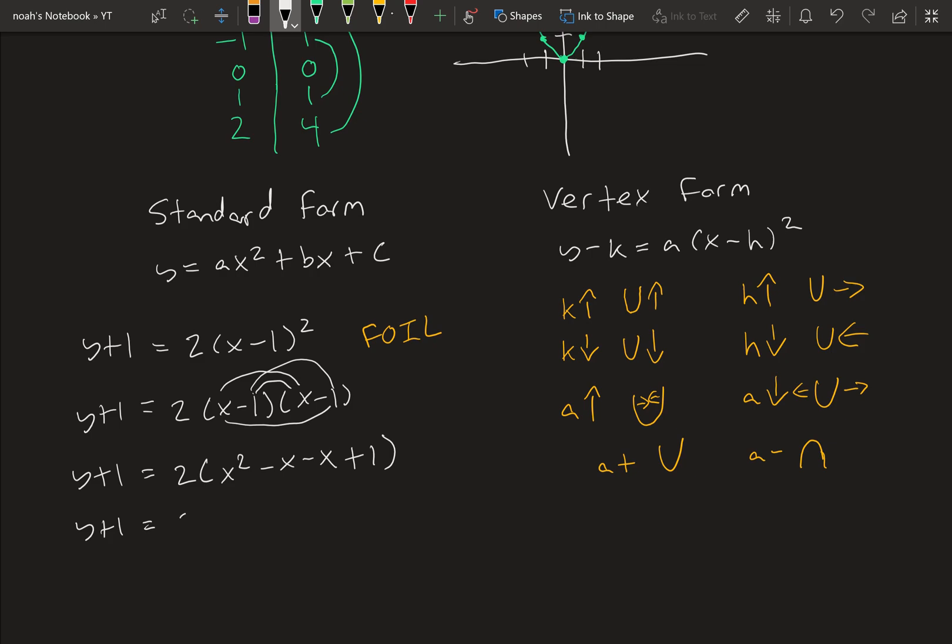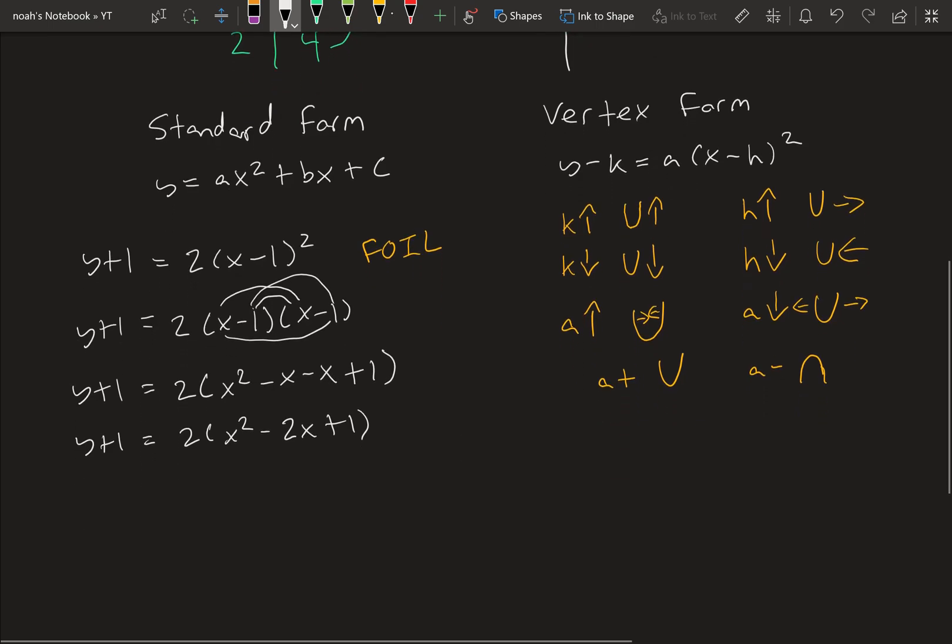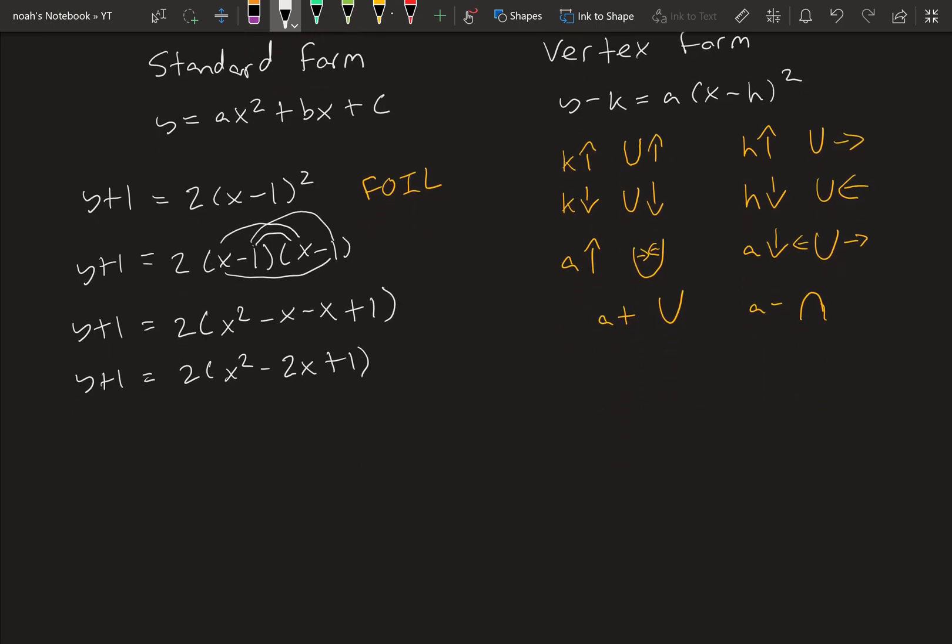So we get y plus 1, 2x squared minus 2x plus 1. And then we got y plus 1 equals 2x squared minus 4x plus 2. And then lastly, y equals 2x squared minus 4x plus 1.